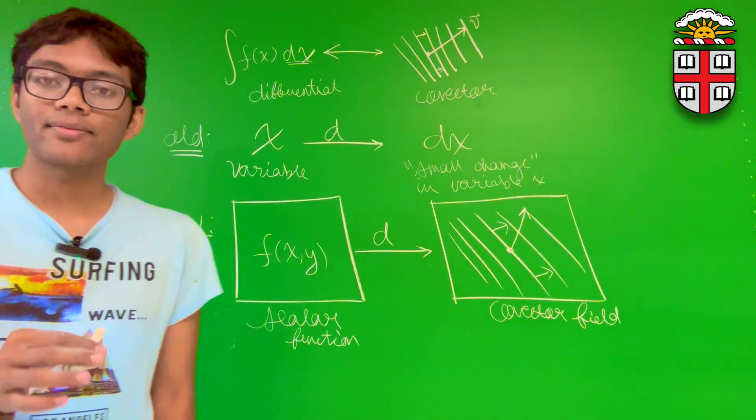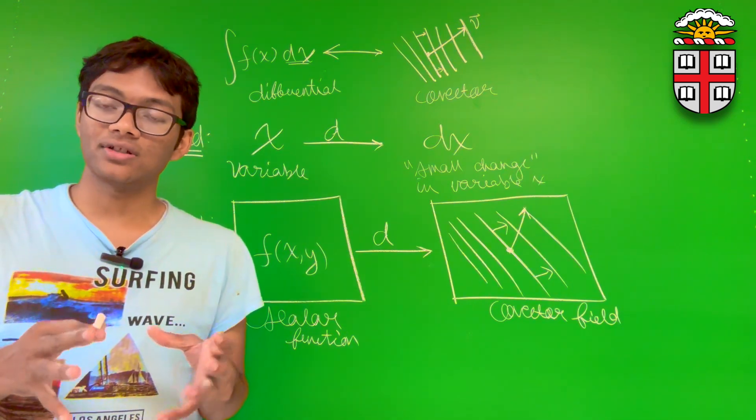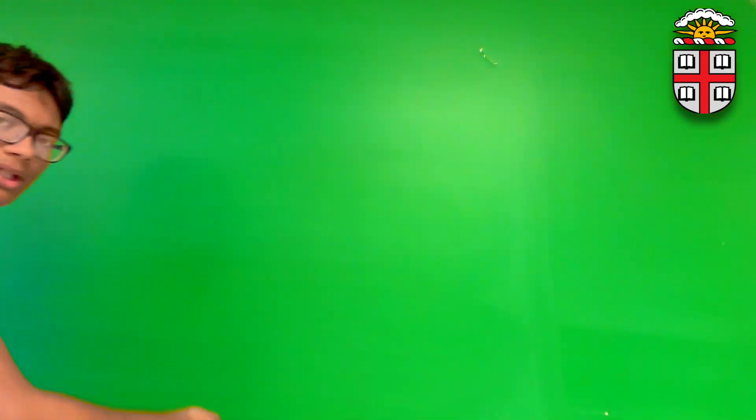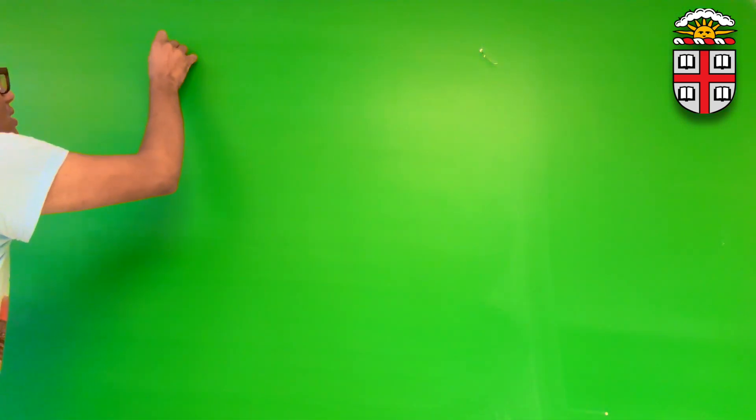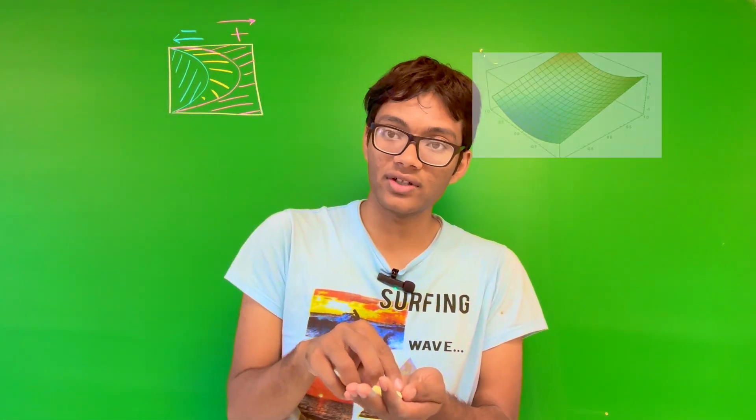So now let's take a look at some examples of co-vector fields in action with the differential application we just talked about. Let's say we have a scalar field that looks as follows. I'm going to use different colors to indicate different values on my scalar field. The color blue will represent very negative values. Such a scalar field might look something like this.